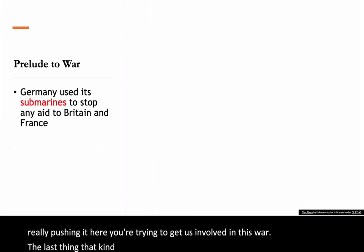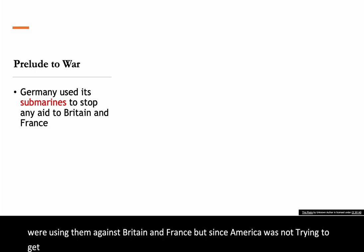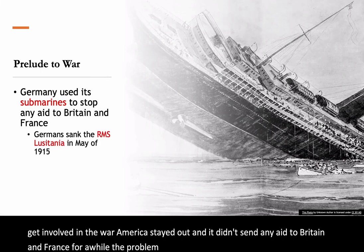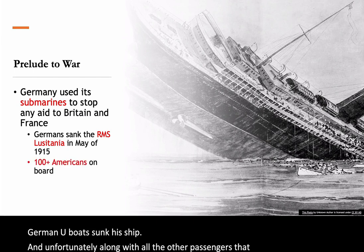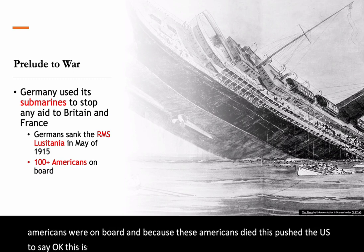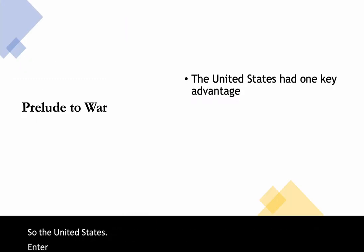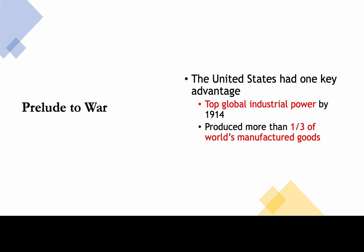The last thing that precipitated the U.S. entering the war was Germany's use of new submarines called U-boats against Britain and France. Since America was staying out of the war, it didn't send aid to Britain and France for a while. But Americans were on board this ship, the RMS Lusitania. In May of 1915, German U-boats sank the Lusitania, and over 100 Americans on board were killed. This pushed the U.S. to say, that's it — we're going to enter the war. The United States entered the war with one key advantage: it was the top global industrial power, producing about a third of the world's manufactured goods by 1914.